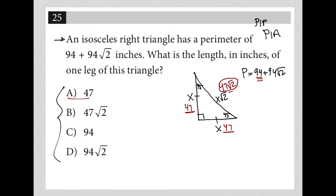But I'd still have a 47 root 2 here, not a 94 root 2. So, that means choice A is gone. The answer is not 47.